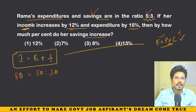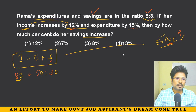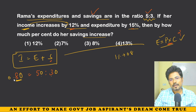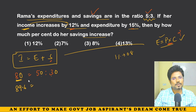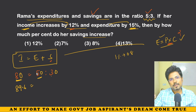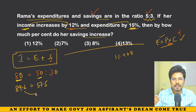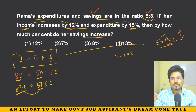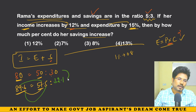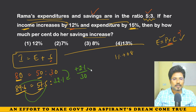Income increases by 12%: 12% of 80 = 9.6, so new income = 89.6. Expenditure increases by 15%: 15% of 50 = 7.5, so new expenditure = 57.5. New savings = 89.6 − 57.5 = 32.1. Original savings were 30, so increase = 2.1. Percentage increase in savings = (2.1 / 30) × 100 = 7% approximately.